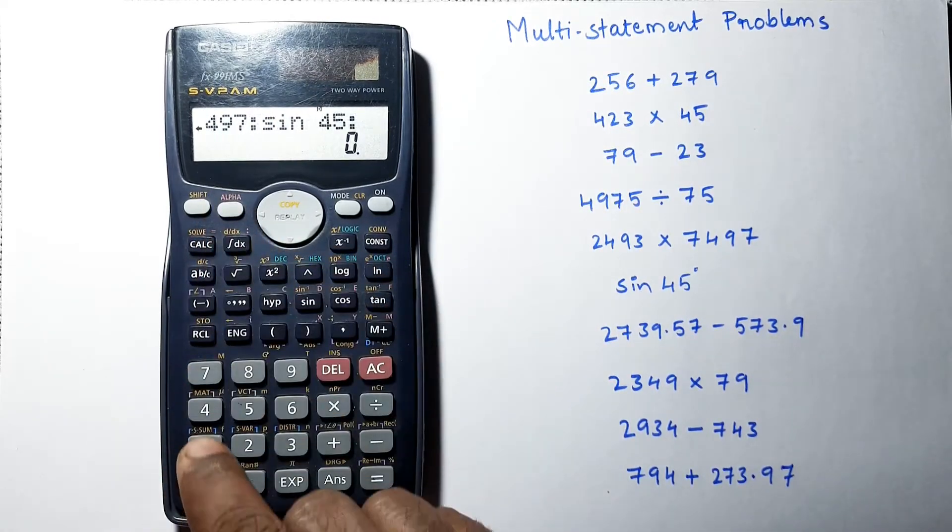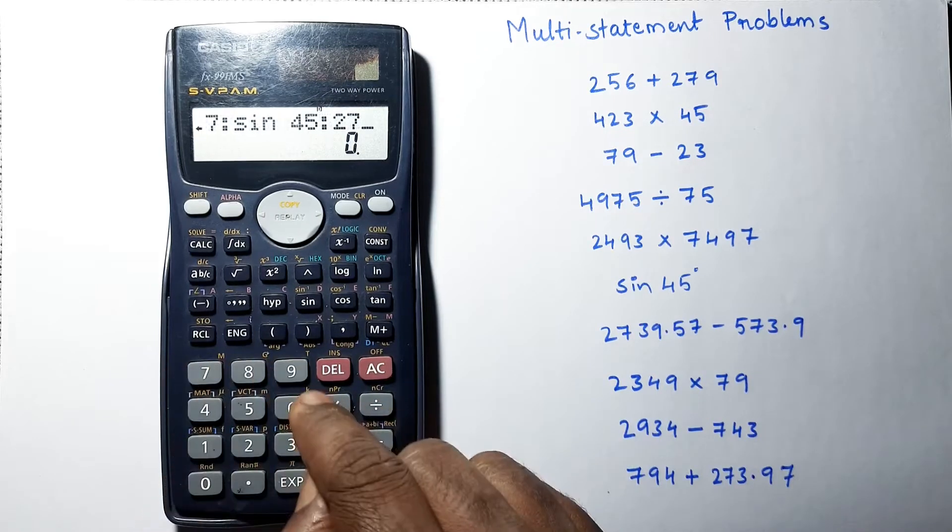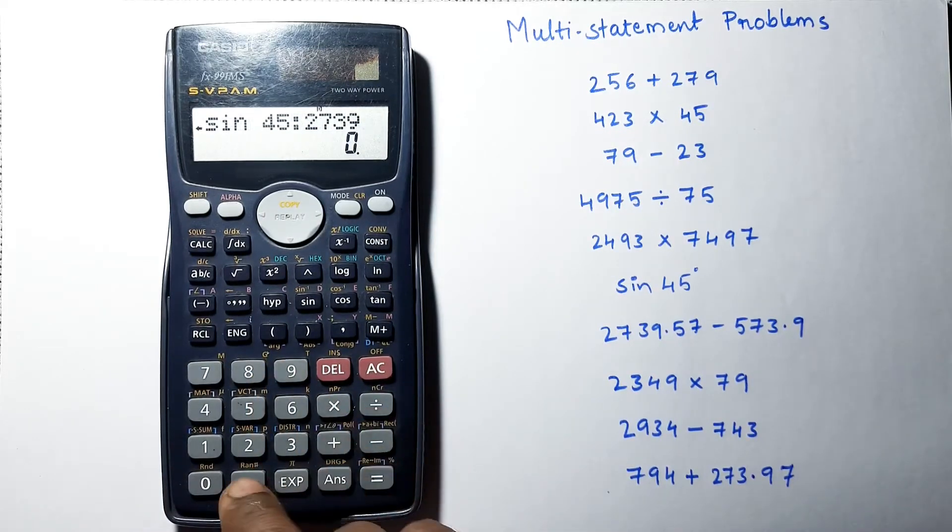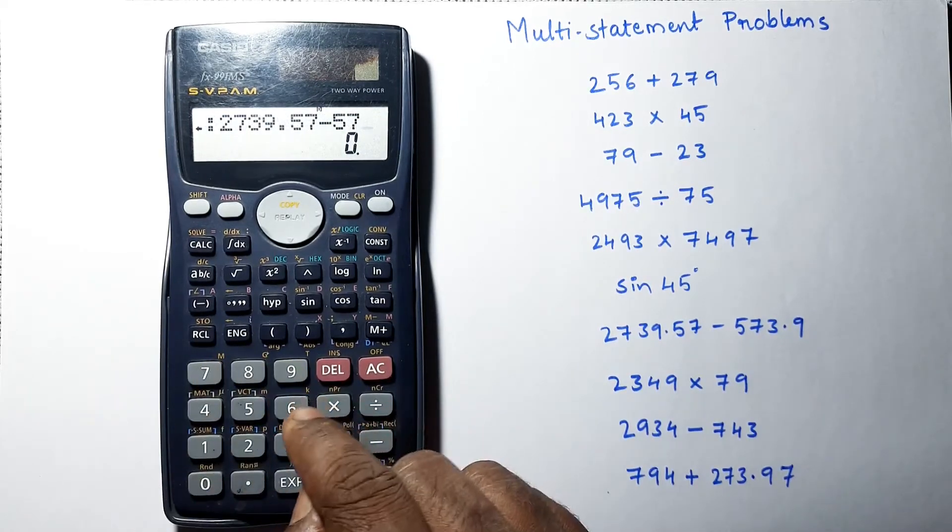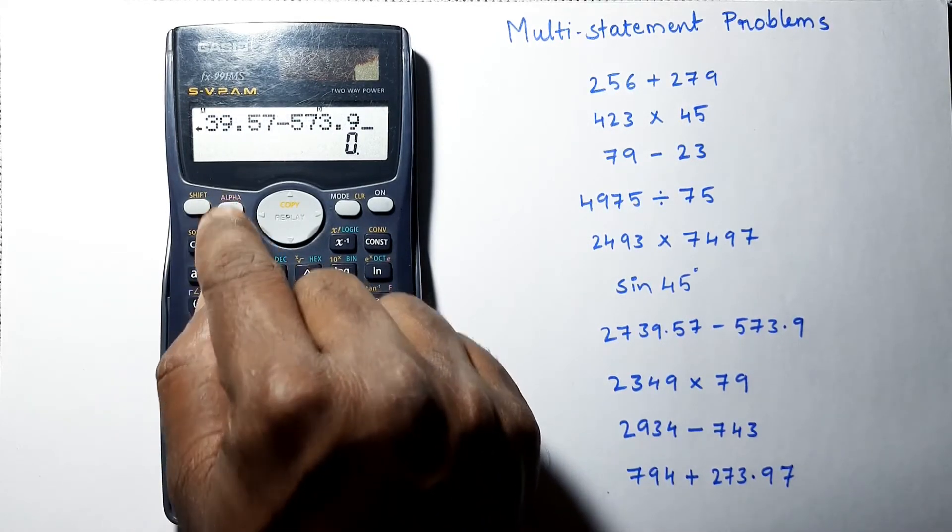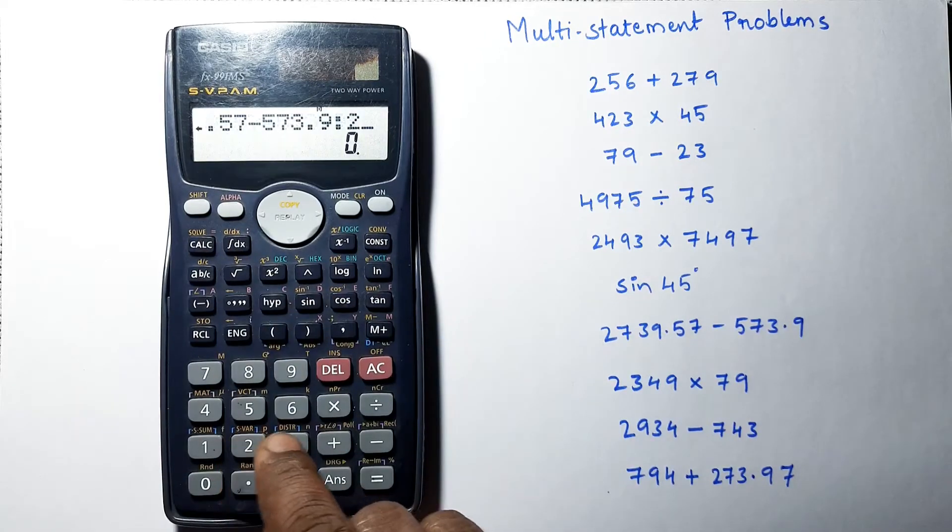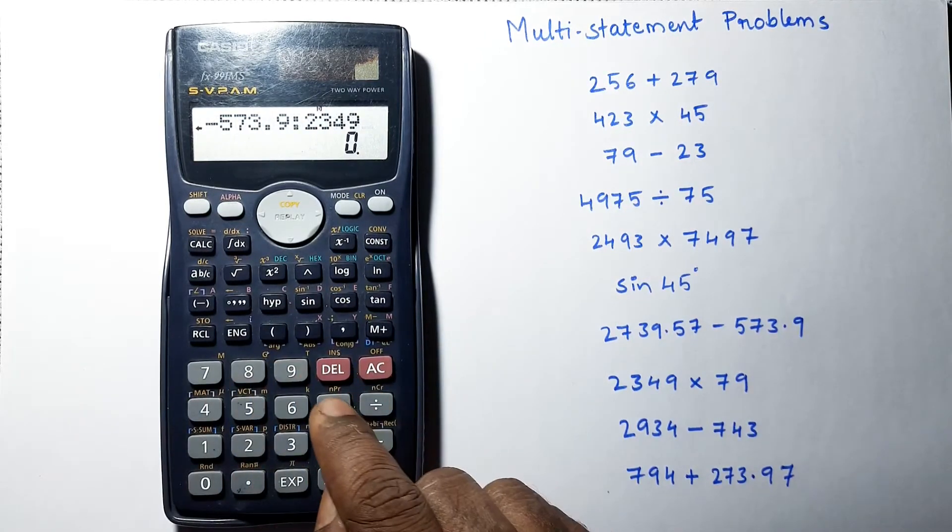Colon, 2739.57 minus 573.9, colon, 2349 multiplied by 79.